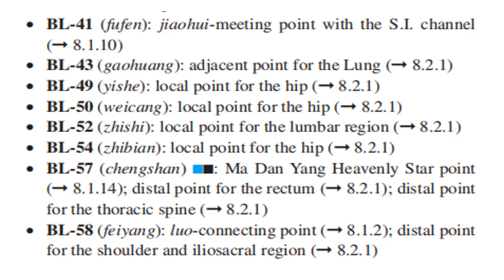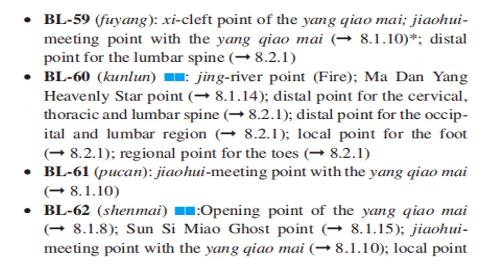Bladder 57 is the Ma Dan Yang Heavenly Star Point, the distal point for the rectum, and the distal point for the thoracic spine. Bladder 58 is the Luo Connecting Point and the distal point for the shoulder and ileo-sacral region. Bladder 59 is the Cleft Point of the Yang Qiao Mai and the Jiao Wei meeting point with the Yang Qiao Mai, and the distal point for the lumbar spine.